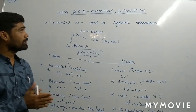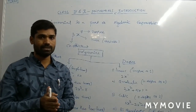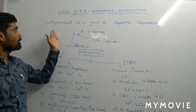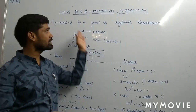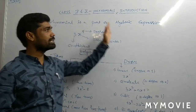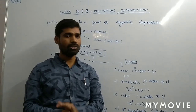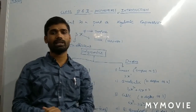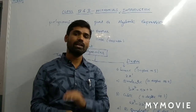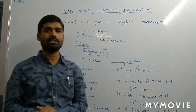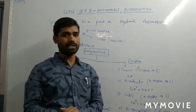We already discussed about the polynomials in the previous eighth class. Here in our polynomials, what is actually a polynomial? A polynomial is nothing but it is a part of algebraic expression. Algebraic expression means the combination of a variable and a numerical.